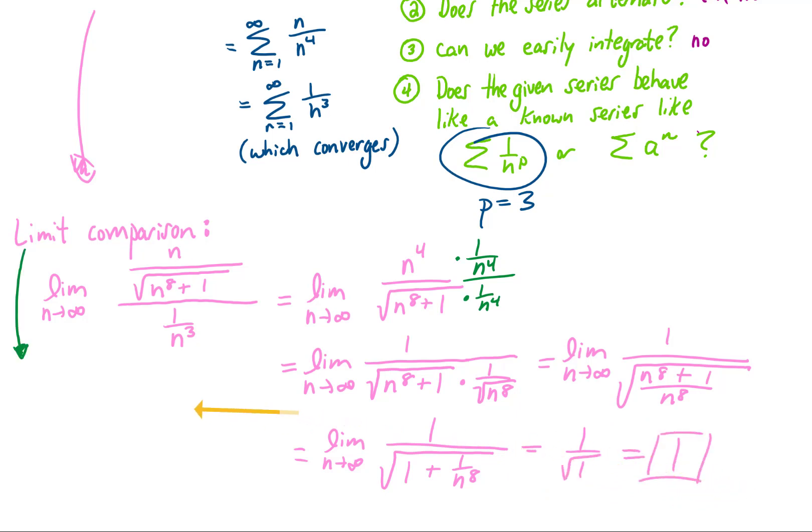Now this limit comparison test says that if the limit of the quotient of our two sequences, the limit that we just took, is finite and not 0, that is the case here because we got 1 as our limit, then the two series either both converge or both diverge.